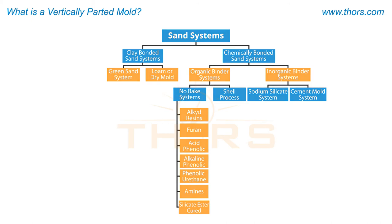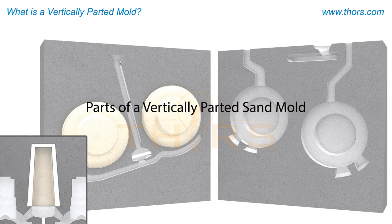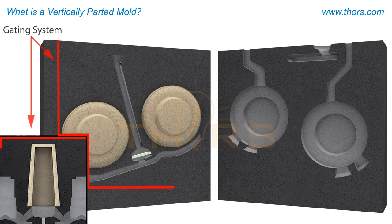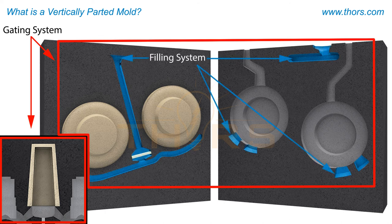To better understand a vertically parted sand mold, it is important to know the parts of the mold and each part's function. The parts of a vertically parted sand mold include the gating system, which is composed of the filling system and the feeding system.